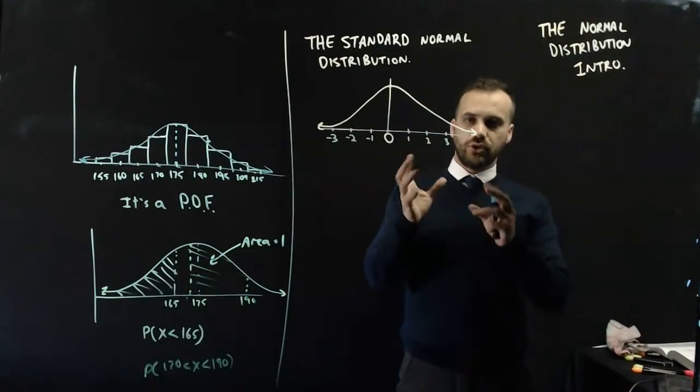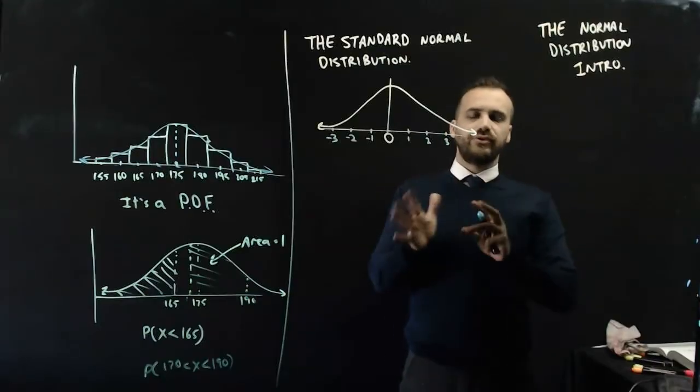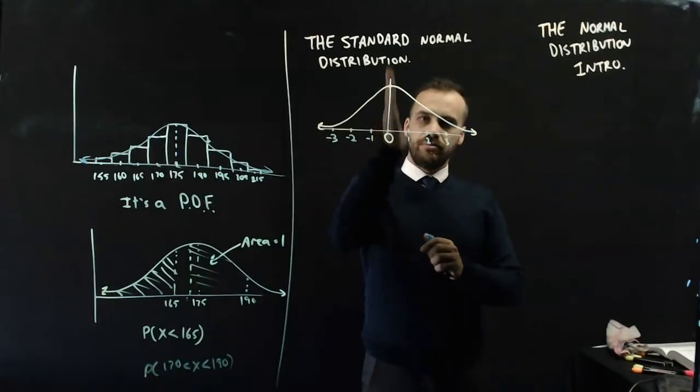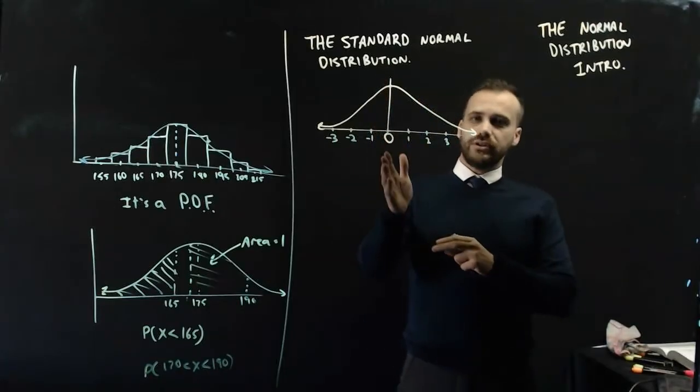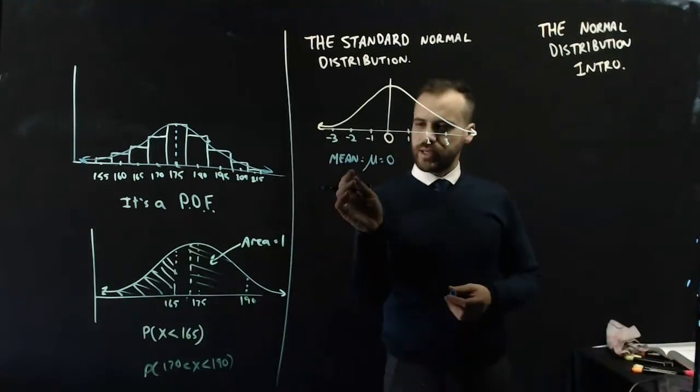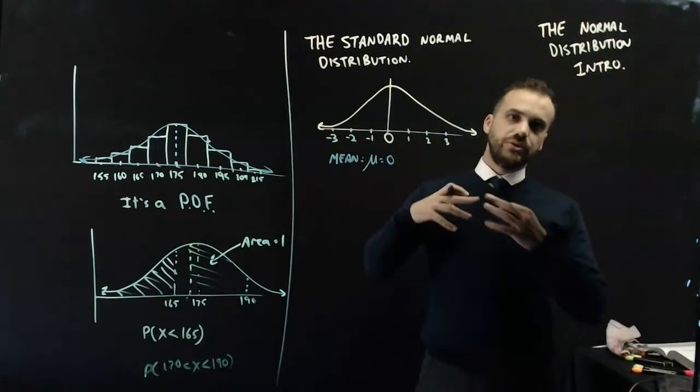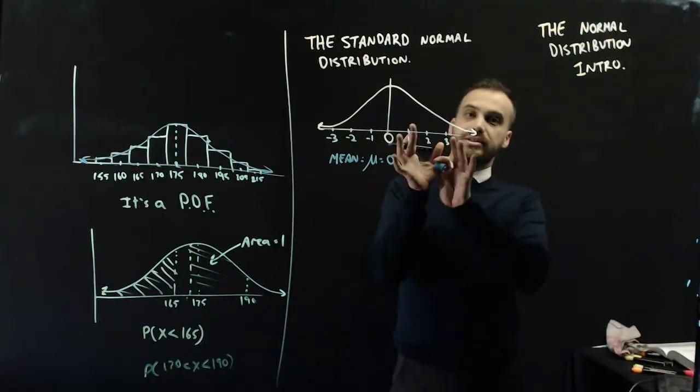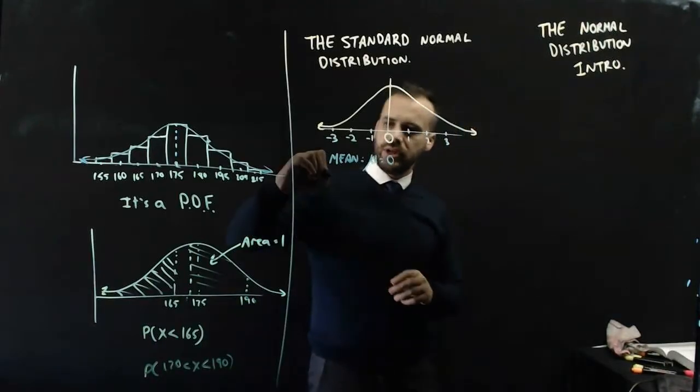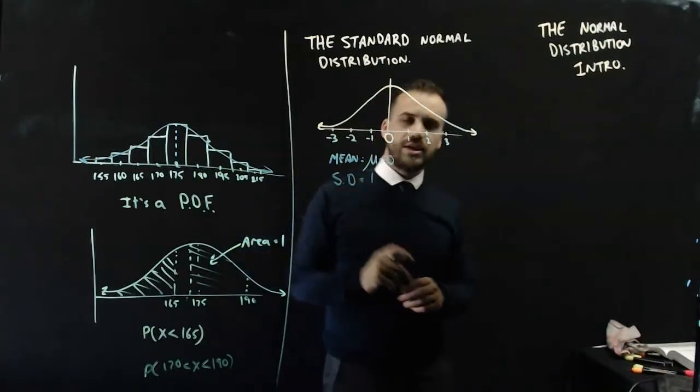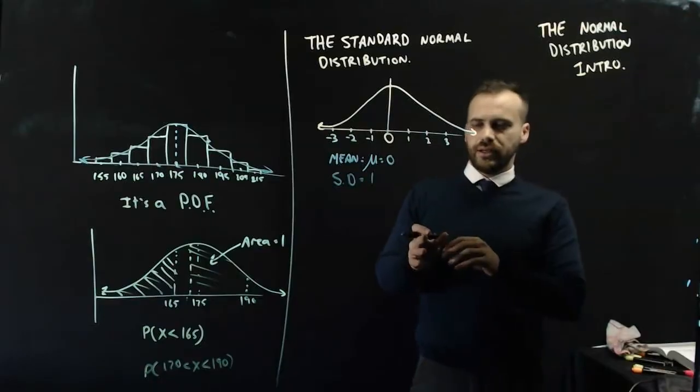Now, the standard normal distribution has a couple of nice things going about it. First of all, it's middle, the mean of it, or the median of it, is 0. So, the mean is equal to this symbol here, μ, which is equal to 0. And also, the nice thing about a standard normal distribution is that the standard deviation is equal to 1.